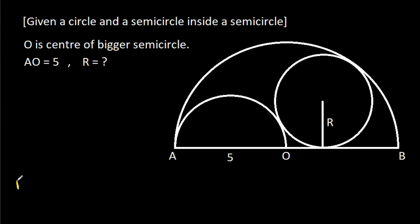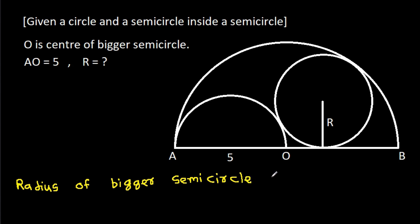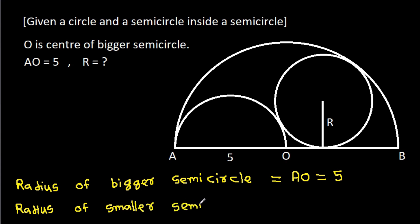The radius of the bigger semicircle will be equal to AO, that is 5. The radius of the smaller semicircle will be equal to AO over 2, because AO is the diameter of the smaller semicircle, so it is 5 over 2.